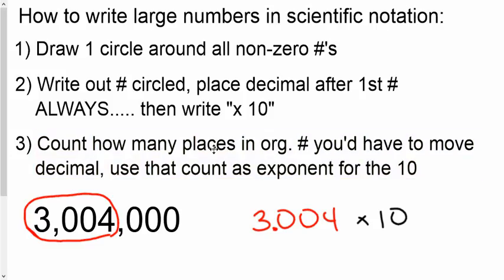The last thing we have to figure out is, what in the world is the exponent? Well, count how many places in the original number you'd have to move the decimal. Your original decimal place for the original number was here. And we moved it over 3 and then 3 more to get to its current spot. So we had to move it a total of 6 spaces. Where you're going to use this count number is for the exponent. 3,004,000 is the same as 3.004 times 10 to the 6th.